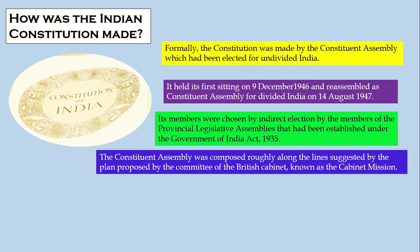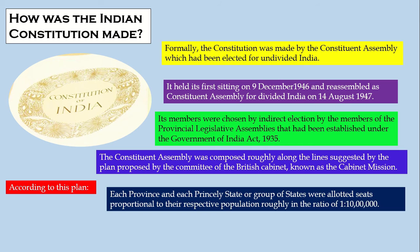The Constituent Assembly was composed roughly along the lines suggested by the committee of the British cabinet, known as the Cabinet Mission Plan. According to this plan, each province and each princely state, or a group of states, were allotted seats proportional to their respective population, roughly in the ratio of 1 to 10 lakhs — meaning one representative for every 10 lakh people.